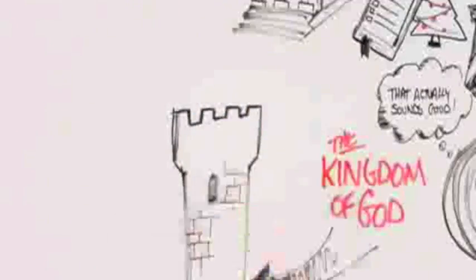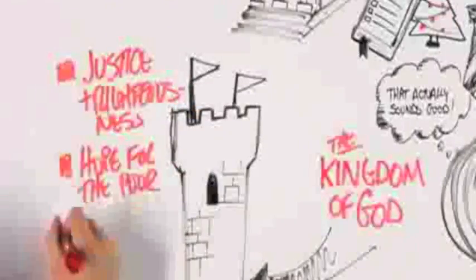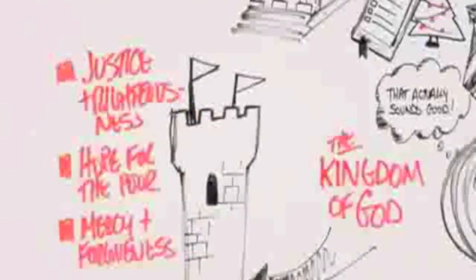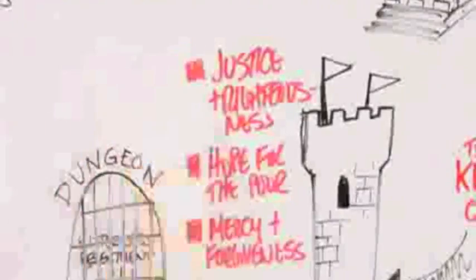And in the kingdom of God, God's purposes are made apparent. There's justice and righteousness. There's hope for the poor and for the oppressed. And under the kingdom of God, mercy and forgiveness take precedence over bitterness and resentment.